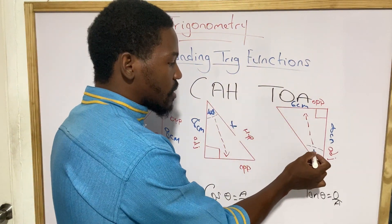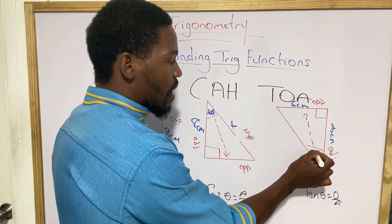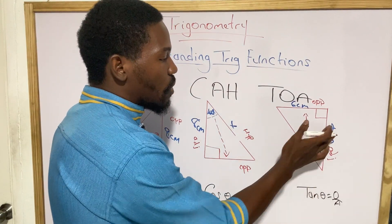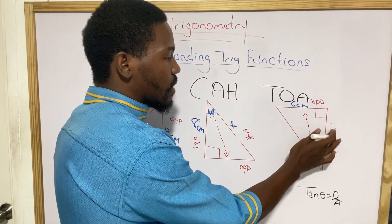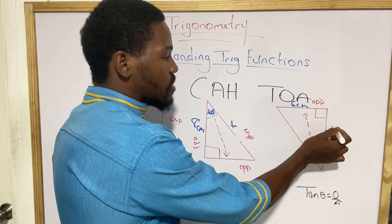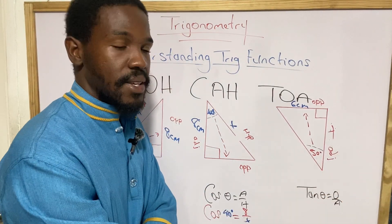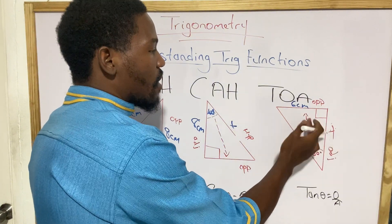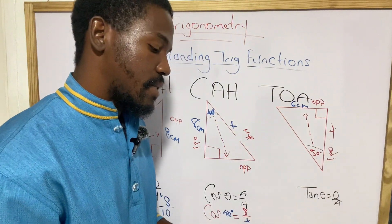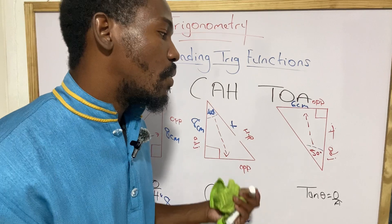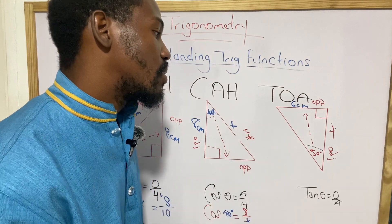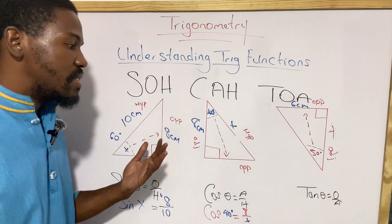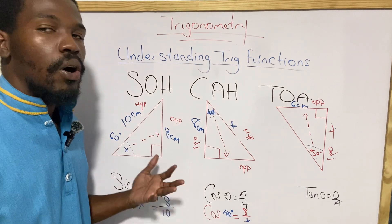If the angle is given — say 50 degrees — then one of the two sides, either the adjacent or the opposite, will be x, meaning we're finding the length of one of those sides. That's how tangent questions are typically given.